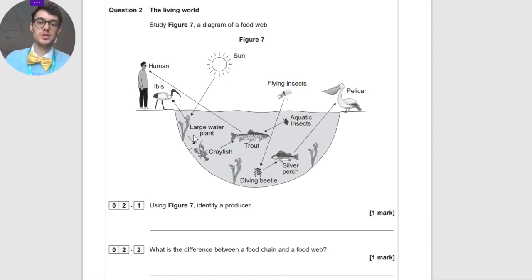So in this case here, you had to mention a large water plant because it had to be an organism that uses photosynthesis to create energy. So it can't be a flying insect. It couldn't be a sun either. It had to be, in this case, a large water plant.